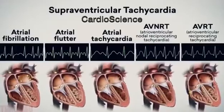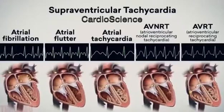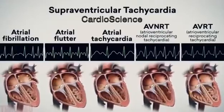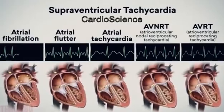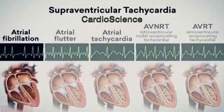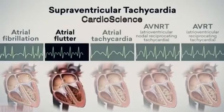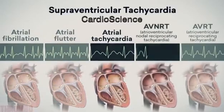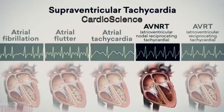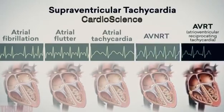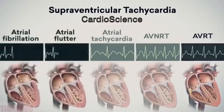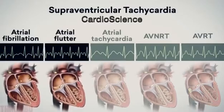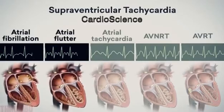Supraventricular tachycardias are conditions associated with a fast heart rhythm and an electrical abnormality of the atria or atrioventricular node. They include atrial fibrillation, atrial flutter, atrial tachycardia, atrioventricular nodal reciprocating tachycardia or AVNRT, and atrioventricular reciprocating tachycardia or AVRT. For more information on atrial fibrillation and flutter, please see our other videos.